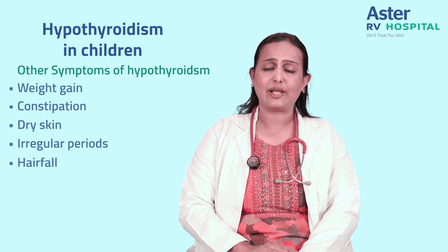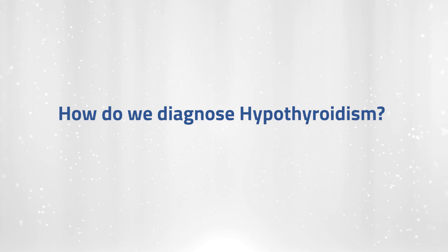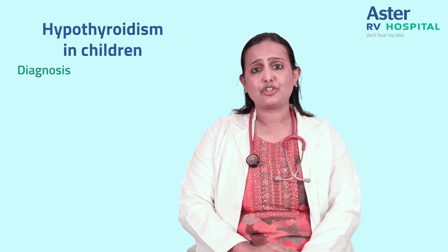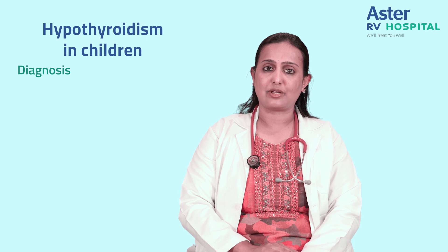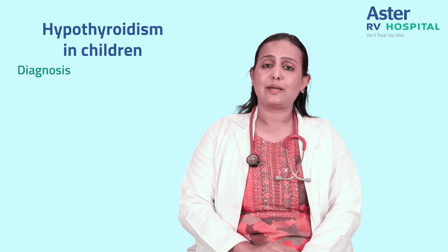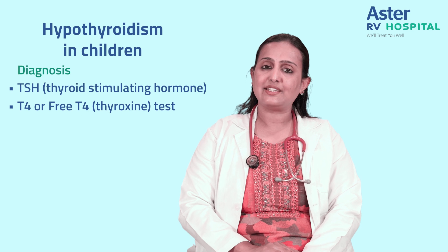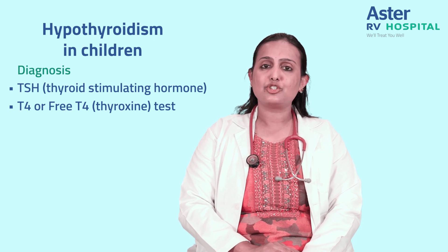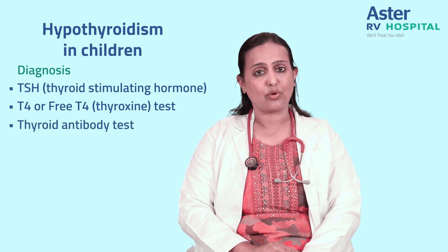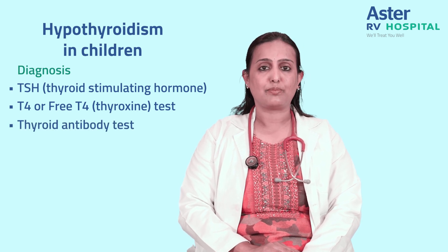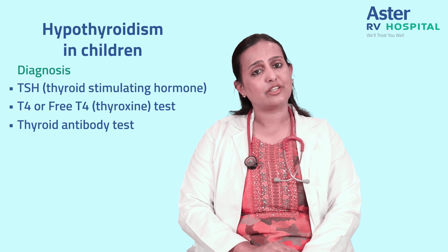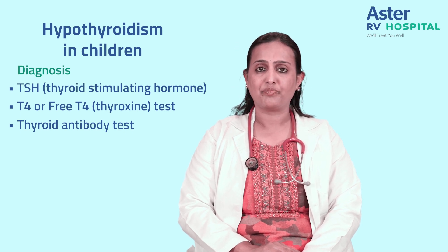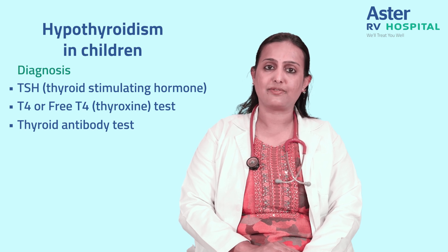These symptoms are not specific to hypothyroidism and may be seen in other conditions as well. A pediatrician or pediatric endocrinologist might suspect hypothyroidism if your child has any of the symptoms mentioned. Tests advised include TSH (thyroid stimulating hormone) and T4 or free T4. In some situations, thyroid antibodies are tested to confirm autoimmune hypothyroidism. In autoimmune hypothyroidism, TSH is elevated, free T4 is low, and anti-TPO antibodies may be positive.